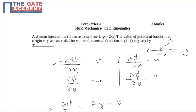So del psi upon del y equals minus u. We also know that differentiation of the potential function with respect to x and y gives velocity in the respective directions. So del phi upon del x equals u, and del phi upon del y equals v.